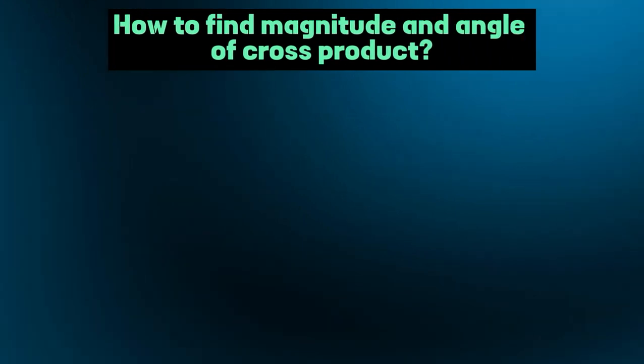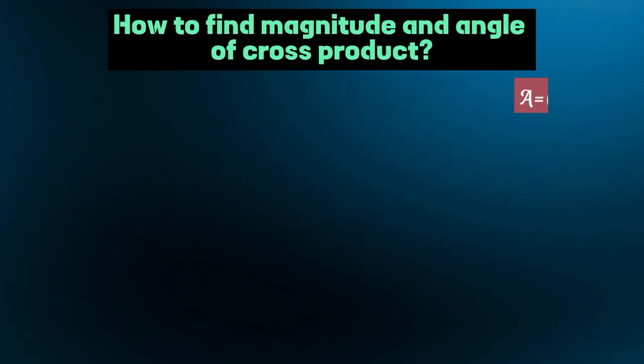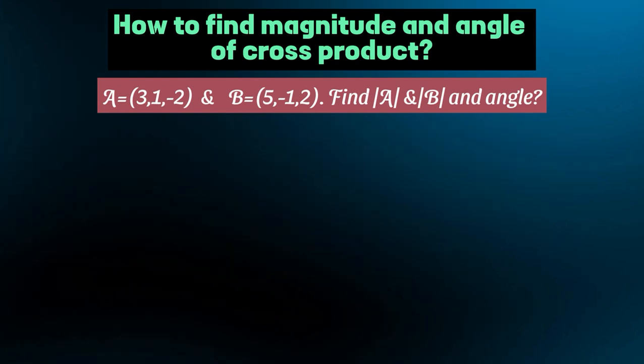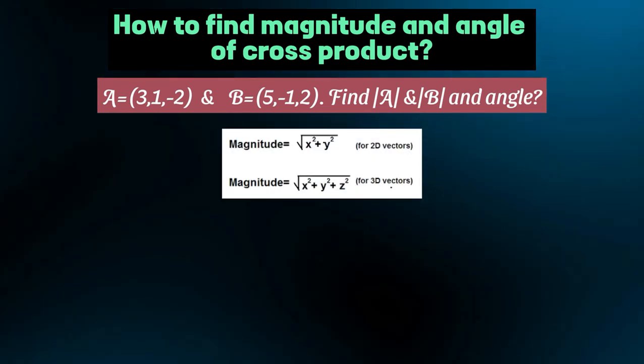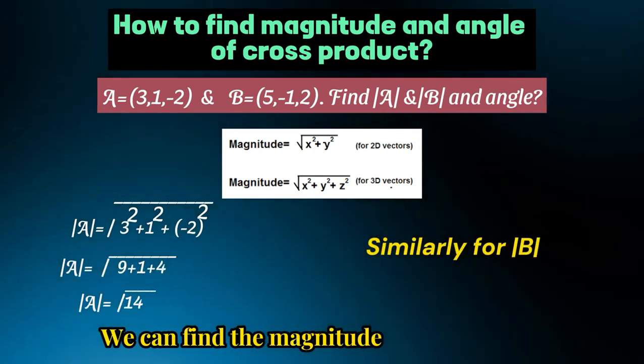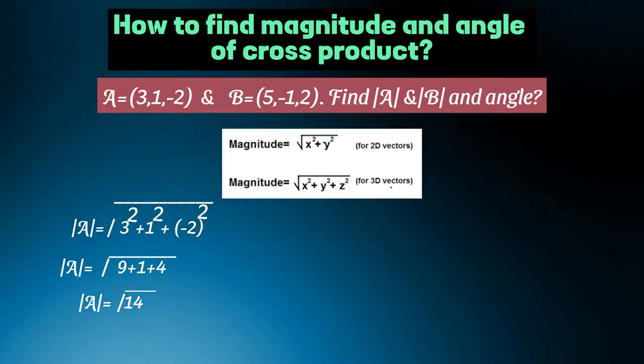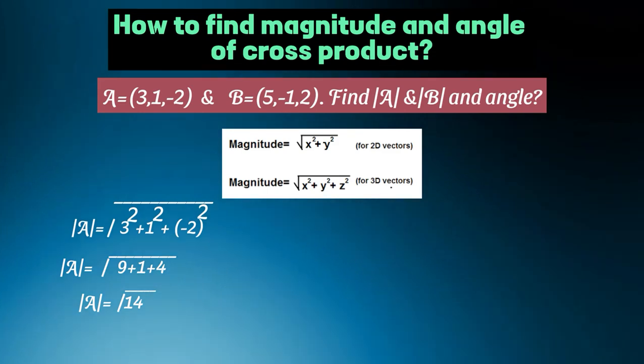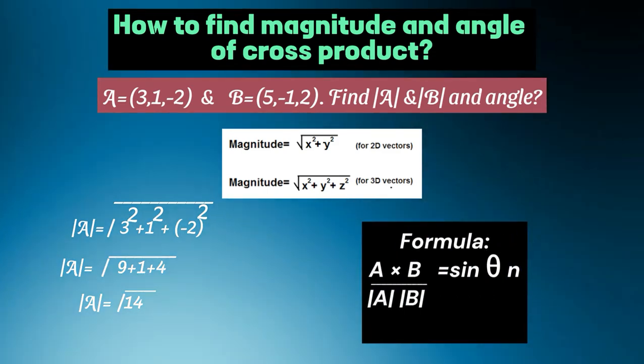How to find magnitude and angle of cross product? Let us assume two vectors. Then the magnitude of two vectors is given by the formula. Putting in formula we can find it. But if we have given cross product and magnitudes of vector a and b, then angle can be found by this formula.